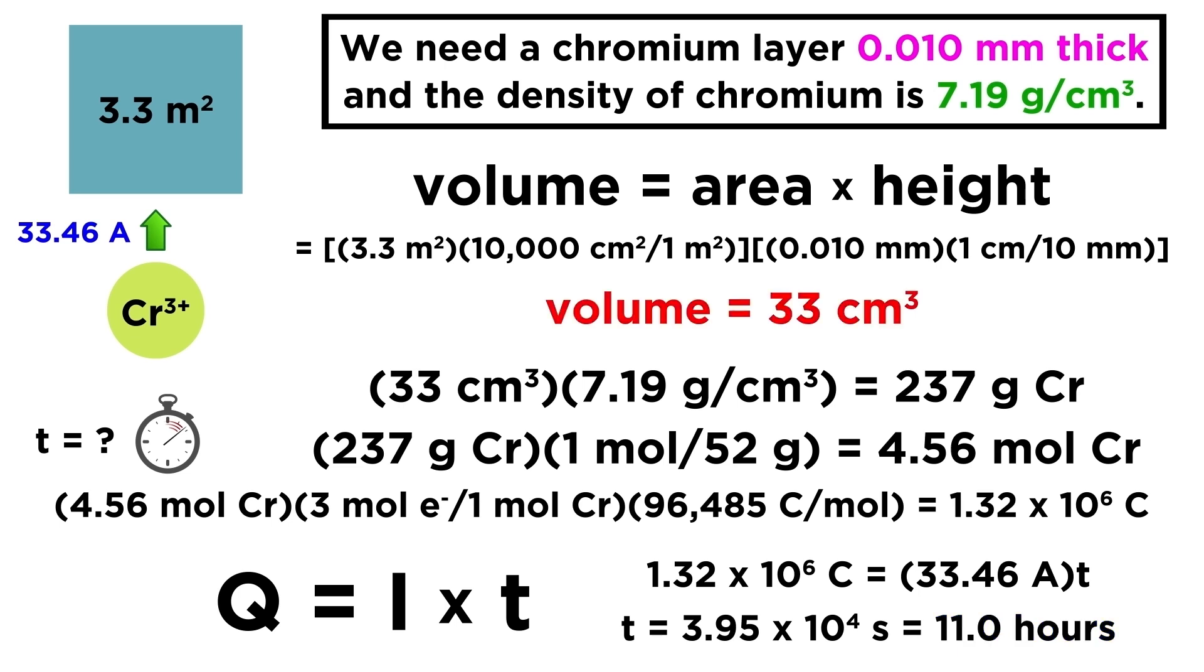So in this way, we have gone from the volume of the desired layer, to the volume of chromium needed to form it, to the mass of chromium needed, to the moles of chromium needed, to the moles of electrons that must be transferred, to the total charge those electrons represent, to the time the current must run to provide that charge transfer.